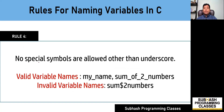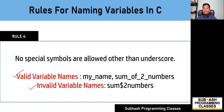Rule number four says that while naming your variable names, you cannot use any kind of special symbol other than underscore. So no special symbols are allowed other than underscore. For example, 'my_name' and 'sum_of_2_numbers' are considered valid variable names because underscore is the only special symbol allowed. Whereas 'sum$2numbers' is invalid because it contains a dollar symbol, which will result in a compile-time error.